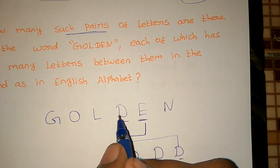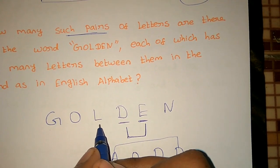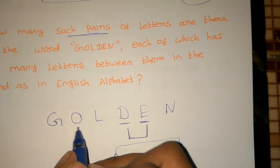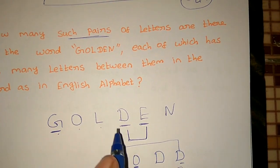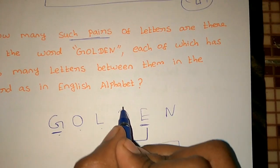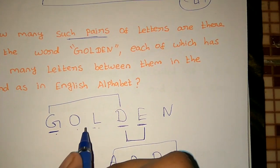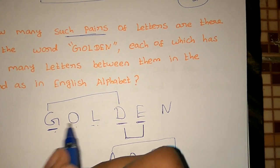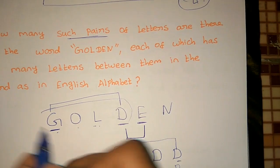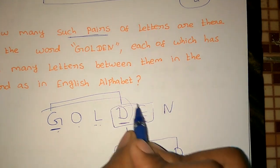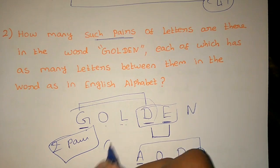If you say D, what does D mean? E, F, G. So if D is G, it's a pair. If D is a pair, what is M and N? That's one pair. So that's one pair, and D is one pair. Total pairs is two pairs. So the answer is two pairs.